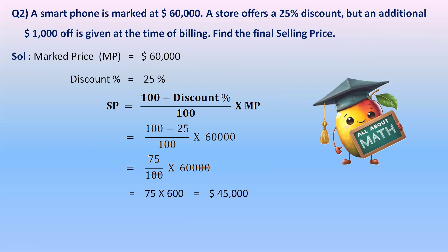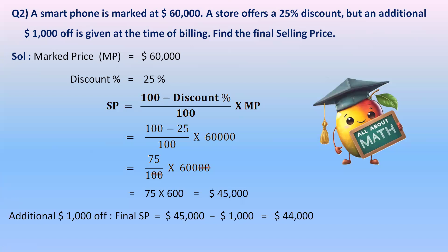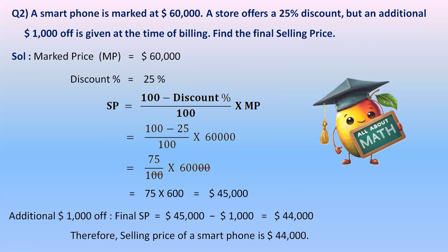After subtraction: 75 × 600 = 45,000. So the selling price after the 25% discount is 45,000. But there is an additional 1,000 rupees off at billing. So the final selling price = 45,000 − 1,000 = 44,000 rupees.